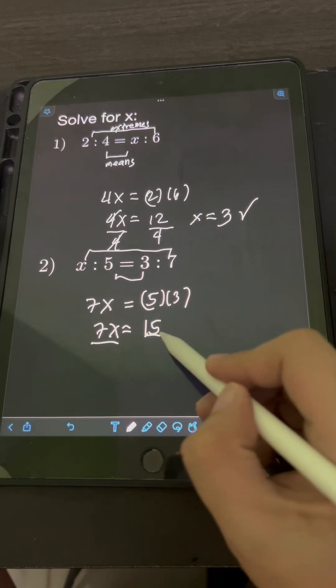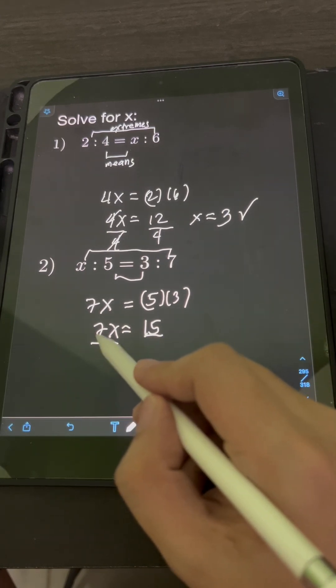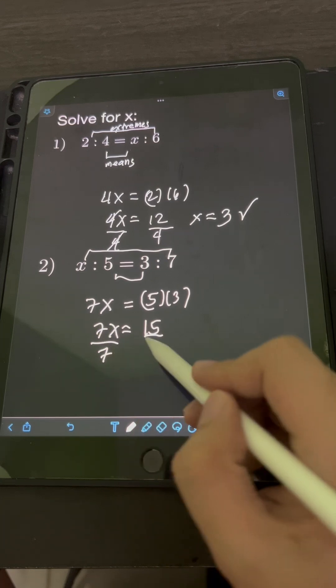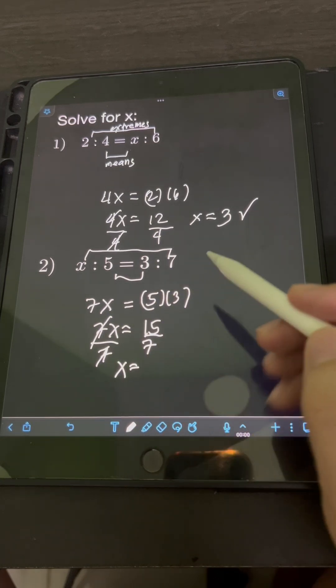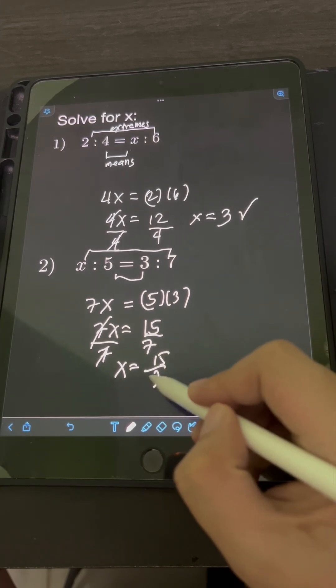So again, to solve for x, we divide both sides by the constant beside the x, 7. So cancelling out this 7, x is equal to 15 over 7.